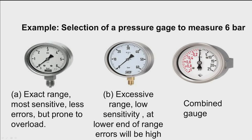For example, in selecting a pressure gauge to measure 6 bar: if we select a gauge with a range of exactly 6 bar, it will be most sensitive with fewer errors but prone to overload if pressure exceeds 6 bar. If we select a 60 bar gauge, it will have excessive range, low sensitivity, and errors will be too high at the lower end of the range.